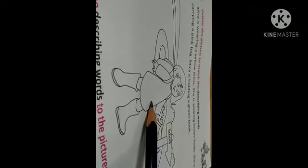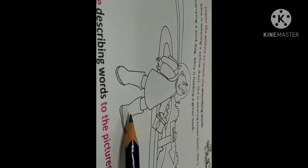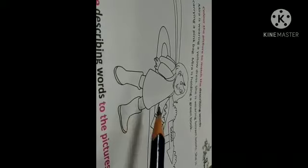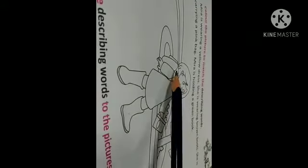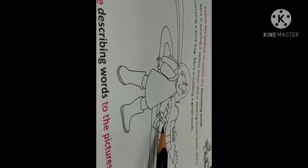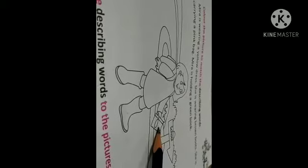Next one is, color the picture to match the describing word. Here, all the describing words are given. You have to look at that carefully and then color it. Mira is wearing yellow dress. So, you have to color Mira's dress in yellow color. She is wearing brown boots. So, what will be the color of boots? Brown. She is carrying a pink bag. Her bag, you have to color it in pink color. Mira is holding a green book.